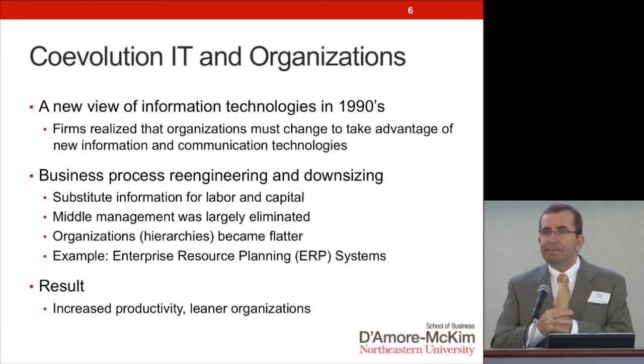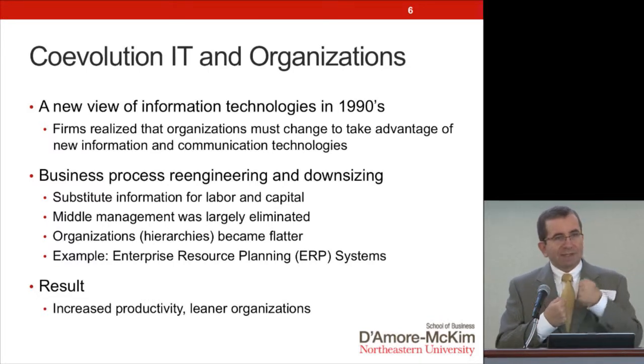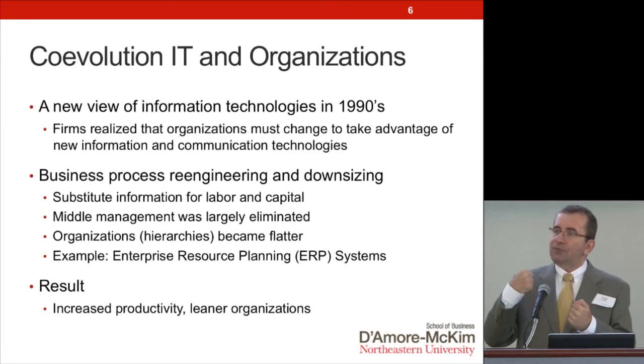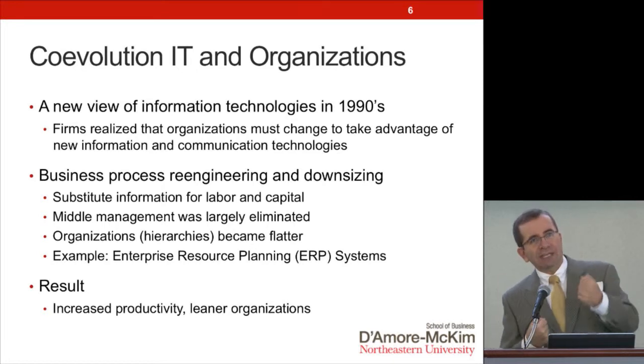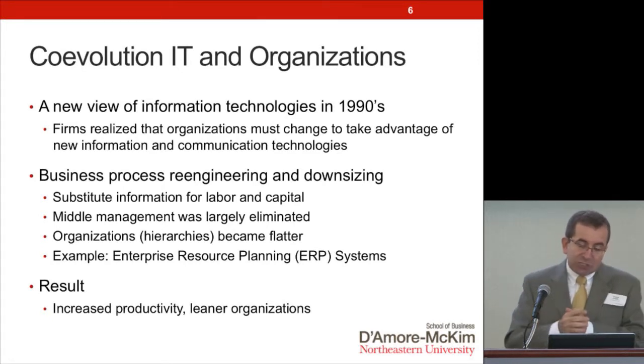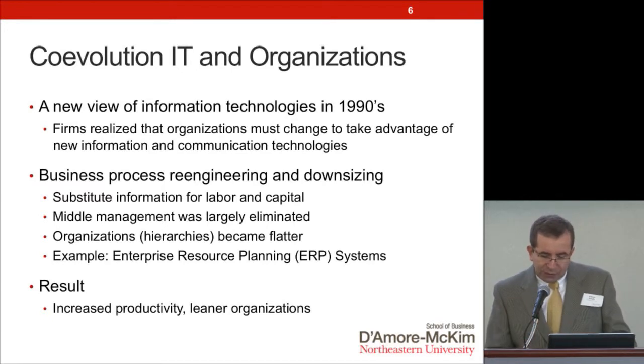An example of this is MRP — materials requirement planning — where productivity gains were not realized. But in the 90s, organizations began to adapt. It's like a dance between technology and organization: technology took a step, and now it was time for organizations to take the next step, then technology takes another step, and organizations take a matching step. In the 90s, organizations took that matching step, and there was a huge increase in productivity.